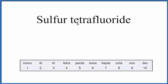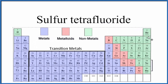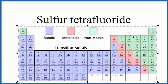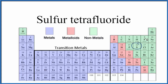To write the formula for sulfur tetrafluoride, we first need to figure out what type of compound we have. We go to the periodic table and look for sulfur and fluorine. Sulfur is right here and here's fluorine. So we have two nonmetals, and when we have two nonmetals, that means it's a molecular compound.